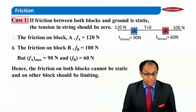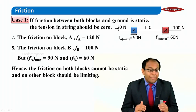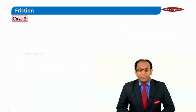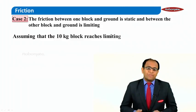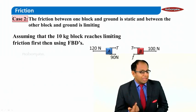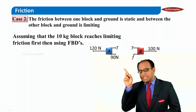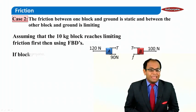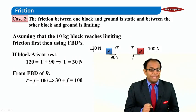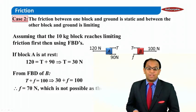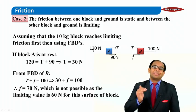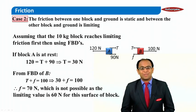So one block must reach its limiting friction value. Let's first assume the 10 kg block A reaches its limiting friction first. The limiting friction on A is 90 N. With 120 N applied to the left and 90 N friction to the right, the tension balancing A would be 30 N. From the free body diagram of B, T plus f = 100 N, so 30 plus f = 100, giving f = 70 N. But 70 N exceeds B's maximum friction of 60 N, so this case is also not possible.